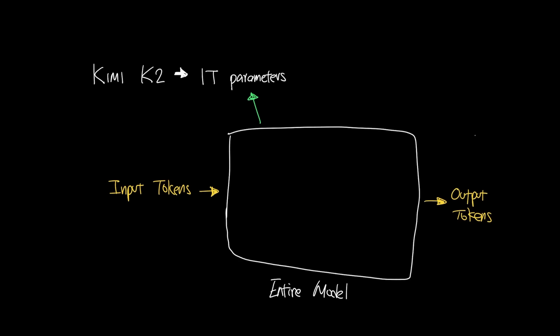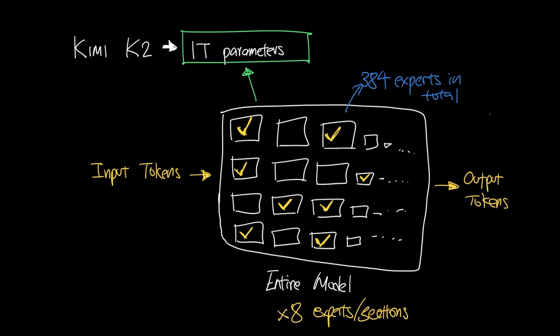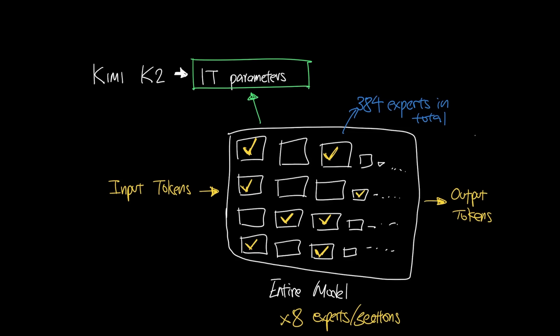That's why even though Kimi K2 is 1 trillion parameters in size, it actually only activates 8 sections, in this case 8 experts per token. The model has in total 384 experts that all add up to about 1 trillion parameters in size, and this makes the inference a lot faster given the size because it only utilizes 32 billion active parameters at a time.